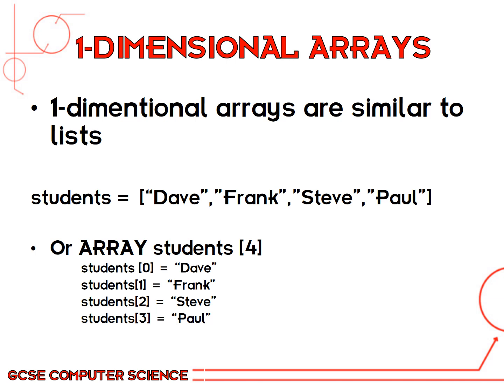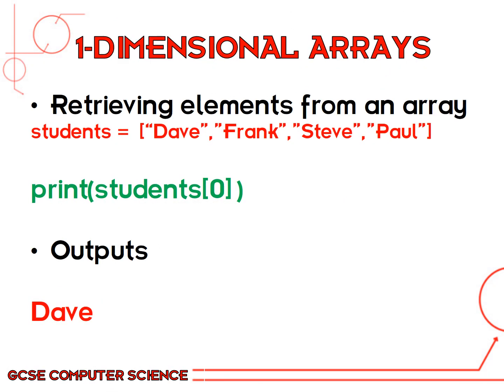Underneath you have to detail what each element is, so students[0] is equal to Dave, students[1] is equal to Frank, and so on. Notice that it starts from 0, because the first element always begins from 0.